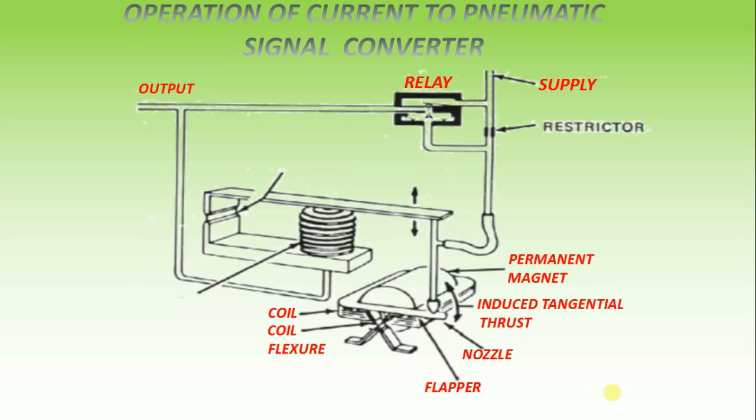This pressure is fed to a feedback bellows which exerts a force on a feedback flexure to move the nozzle and establish a throttling relationship between the flapper and the nozzle, thus producing the output pressure according to the input milliamps.